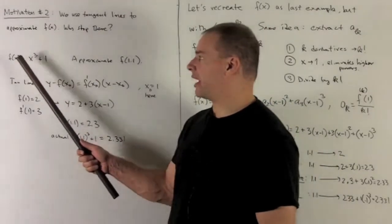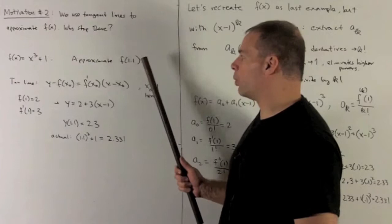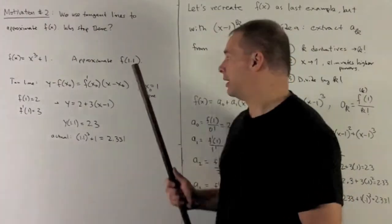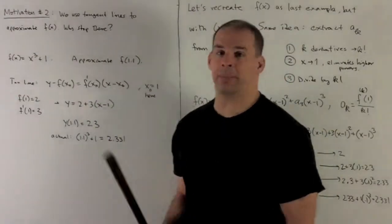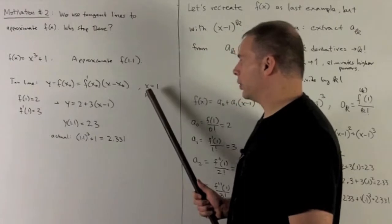For instance, let's take the function f(x) equal to x cubed plus 1. I want to approximate f(1.1). So if I want to do that with a tangent line, I have to find a point near 1.1 where the function behaves really nice.